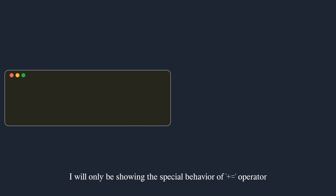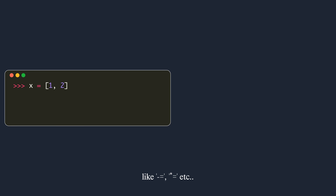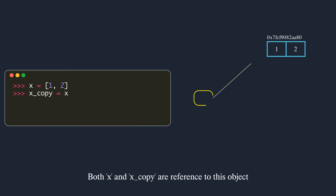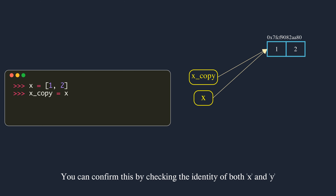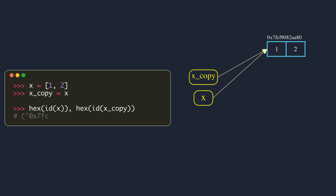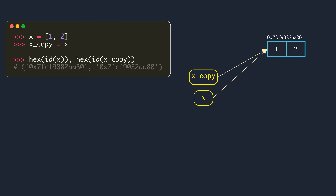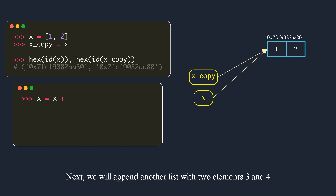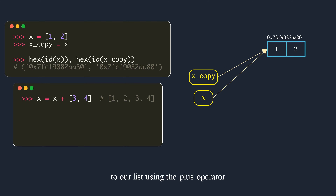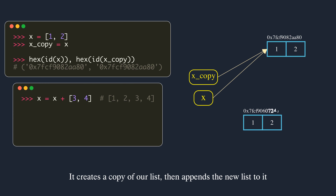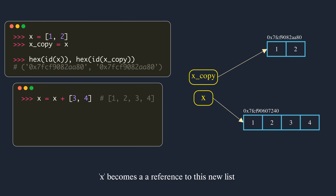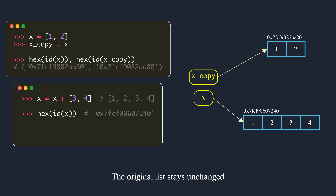Now let's look at the plus-equals augmented assignment operator — the same behavior applies to other augmented arithmetic assignment operators like minus-equals, multiply-equals, etc. Here we have a two-element list object. Both x and x_copy are references to this object. Using the plus operator, Python first evaluates the right side, creates a copy of our list, then appends the new list to it. Since we assign the result back to x, x becomes a reference to this new list. The original list stays unchanged and is still accessible through x_copy.